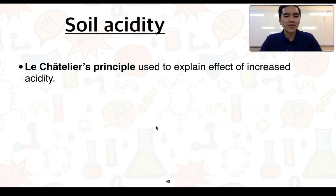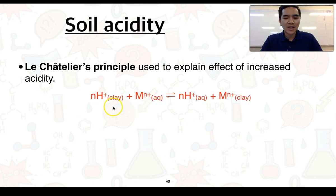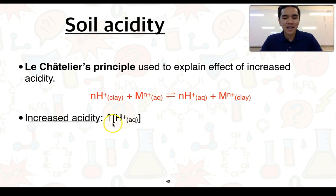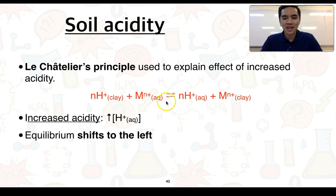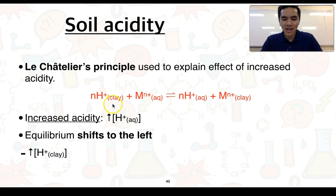Using Le Chatelier's principle, we can explain the effect of increased acidity. There is a general equation where hydrogen ions and metallic ions are in equilibrium between clay and soil water. An increase in acidity increases the concentration of hydrogen ions in solution on the right-hand side of the equation. The equilibrium shifts to the left to offset this stress, decreasing H⁺ in solution. This increases H⁺ adsorbed to clay and also increases the concentration of metallic ions in solution.